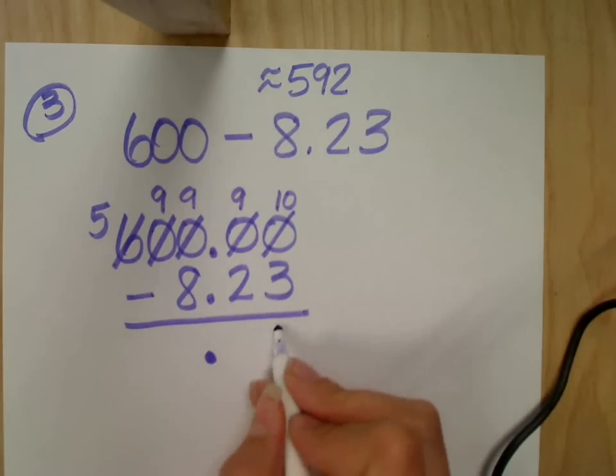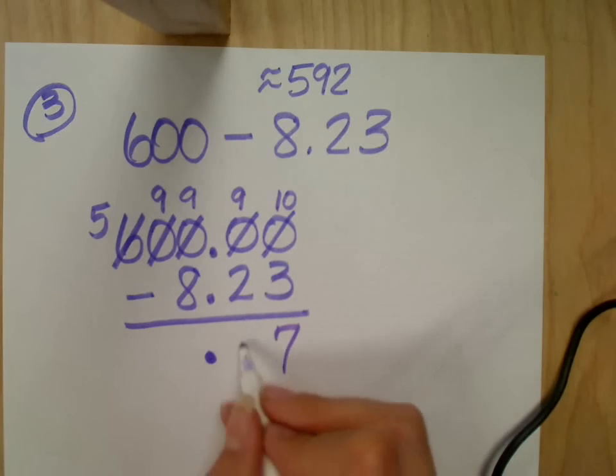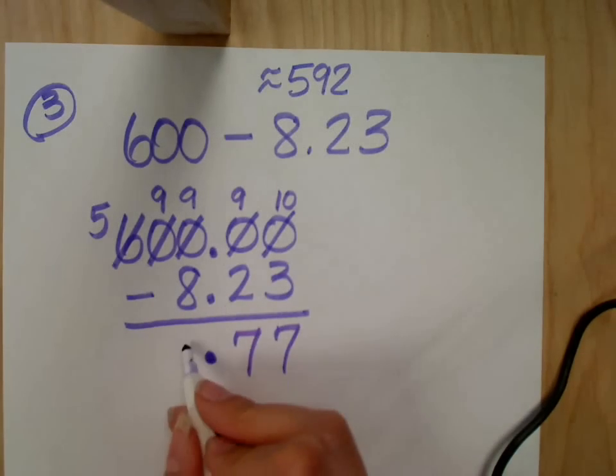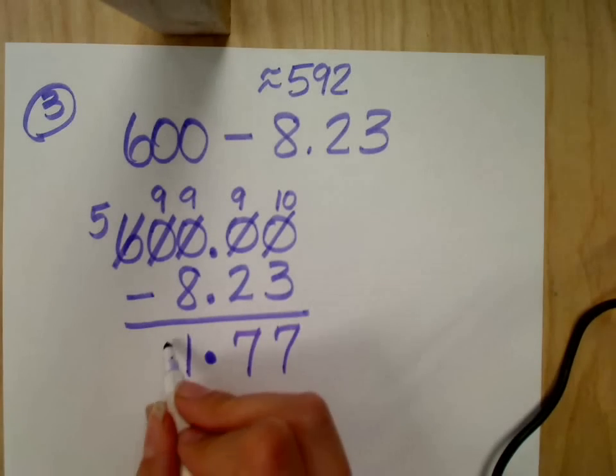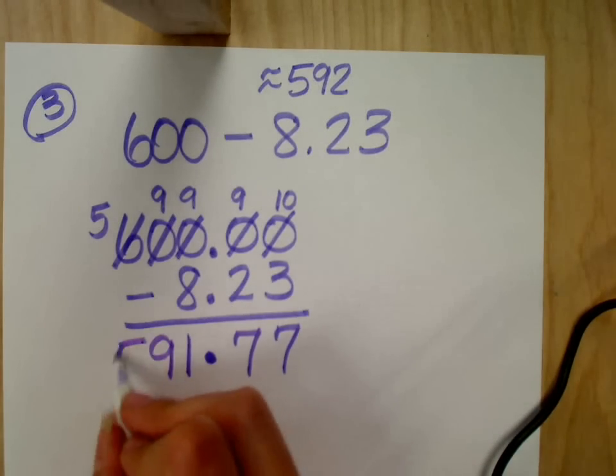10 take away 3? 7. 9 take away 2? 7. 9 and 8? 1. 9 and nothing? 9. 5 and nothing? 5.